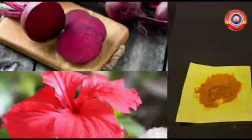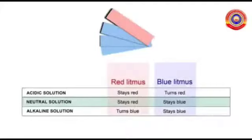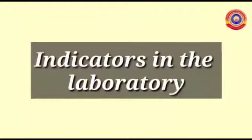Indicators are substances that help us to distinguish between acids and alkalis through color change. Parts of plants like turmeric, hibiscus, beetroot, etc. can be used as indicators. Litmus paper is an indicator used in laboratory.